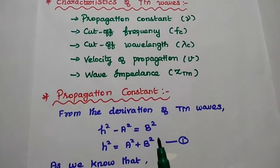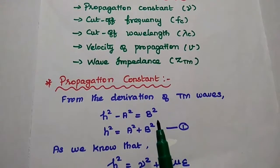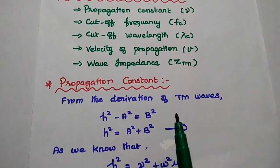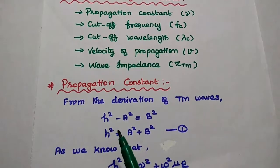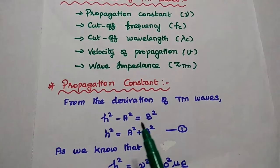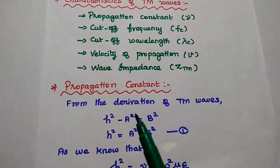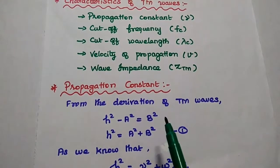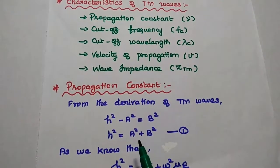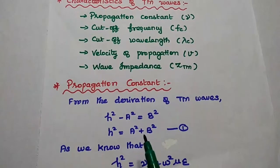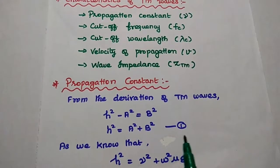The first one is propagation constant. As we have already derived the TEM waves field equations in the last lecture video, we assumed that H squared minus A squared is equal to B squared. We can take that value here. Then moving A squared to the other side, we get H squared is equal to A squared plus B squared. Consider this as the first equation.